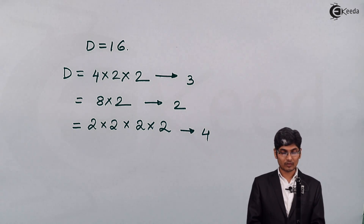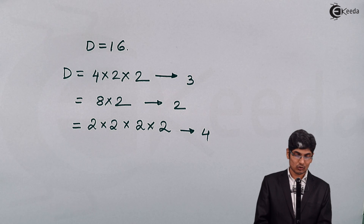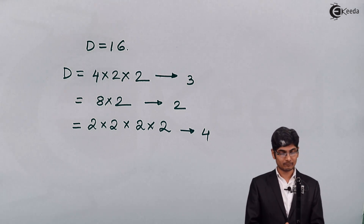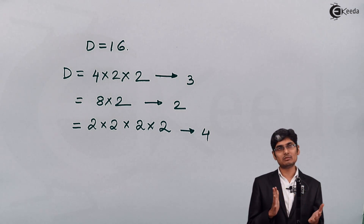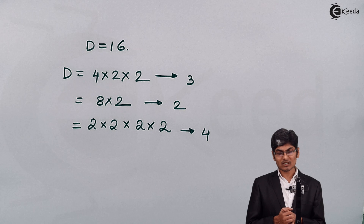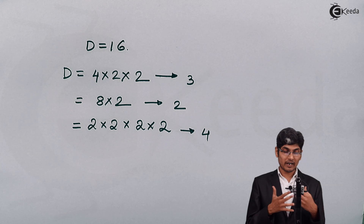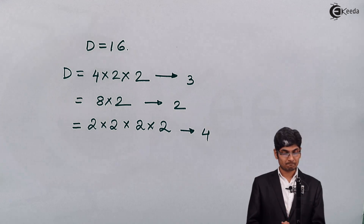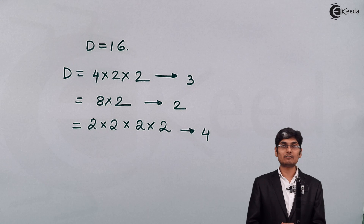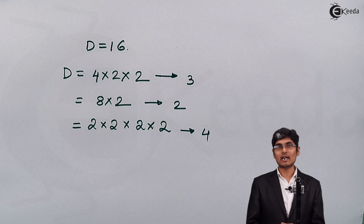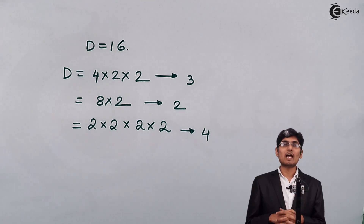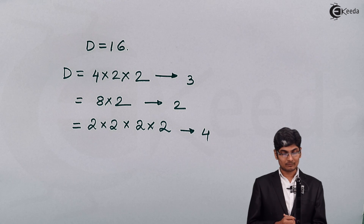The more stages we use, the more time delay is introduced by each system. So we need an optimum solution when dividing or factorizing a number. What I am going to do is factorize the given down-sampler or up-sampler factor into smaller sub-factors and cascade them.